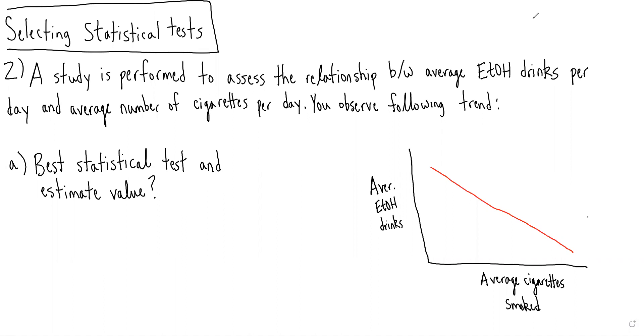So in this case, a study is performed to assess the relationship between average number of alcoholic drinks per day and average number of cigarettes per day. We observed the following trend shown in the bottom right-hand corner. And we're asked, what is the best statistical test? And what's your estimate for the value of that test?